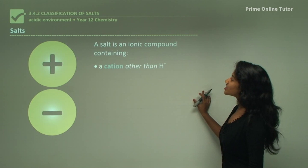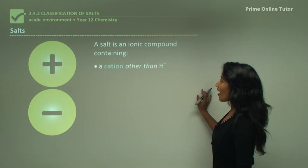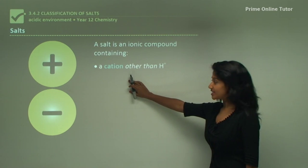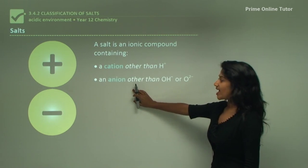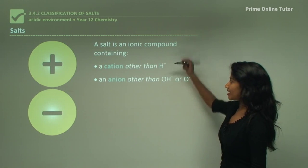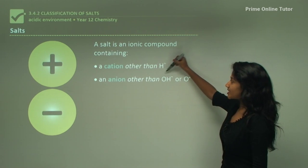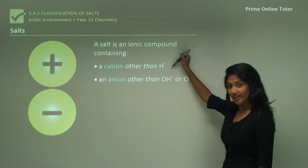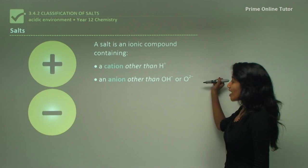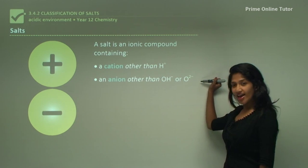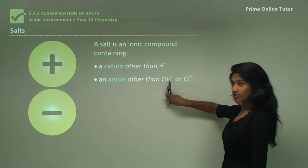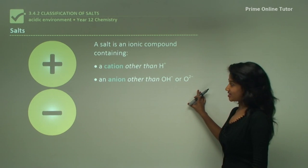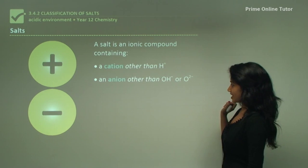Firstly, a salt is an ionic compound containing a cation and an anion. In other words, it will contain a cation other than hydrogen ions, and also an anion other than hydroxide ions and oxide ions.